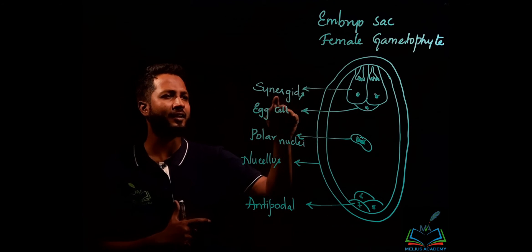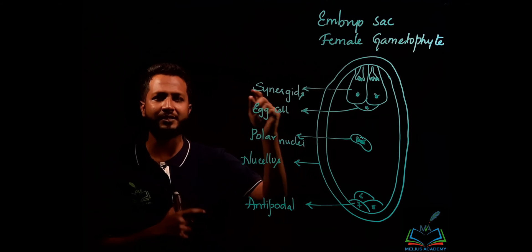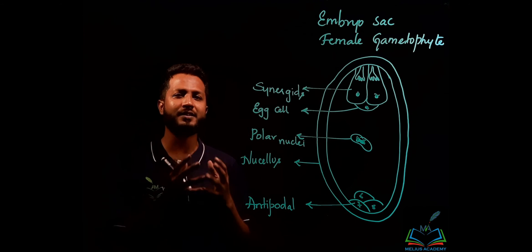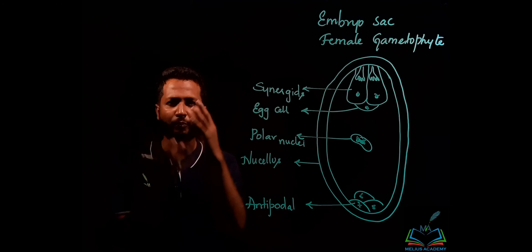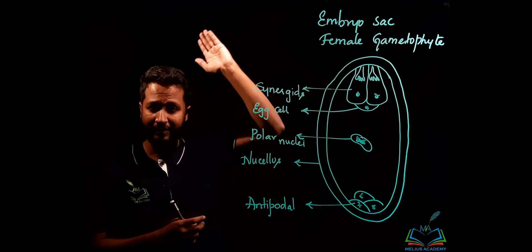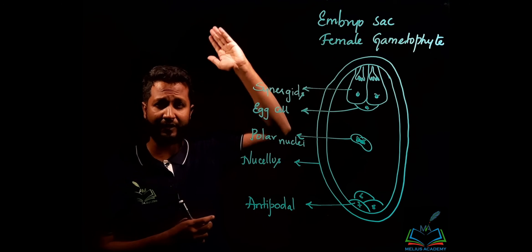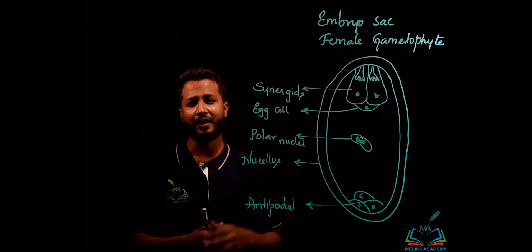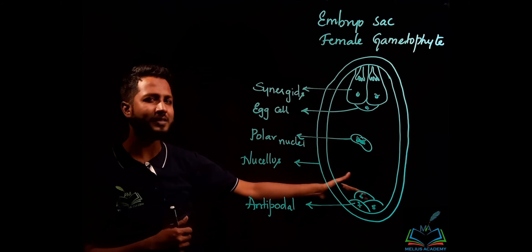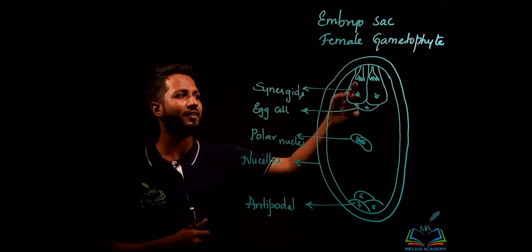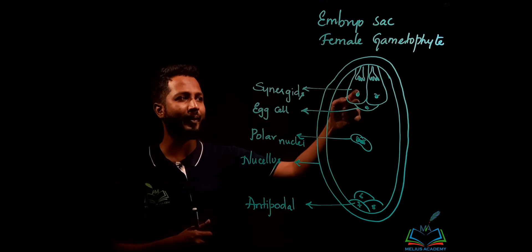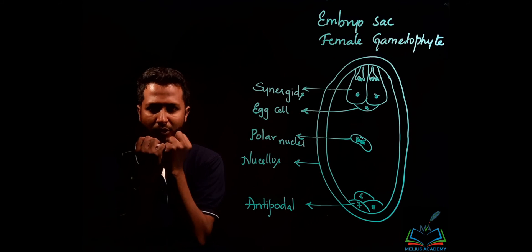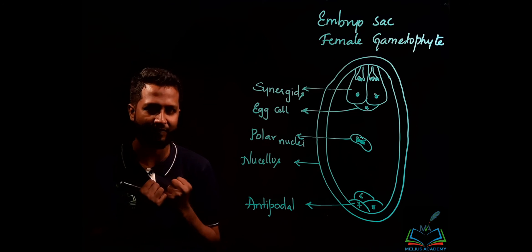You need to explain each cell. Write synergids and their role. The role of synergids is to attract the pollen tube. The pollen grain falls onto the stigma, very far from the embryo sac, but it is guided exactly towards the embryo sac because of the filiform apparatus and synergids, which release chemicals that attract the pollen tube towards itself.